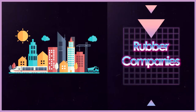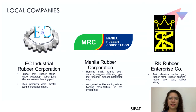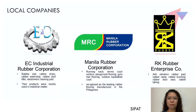For major companies in the rubber industry, we have three local companies. First is Easy Industrial Rubber Corporation, well known for providing dependable and affordable rubber products adhering to the highest quality standards. Their products are mostly utilized in industrial applications, particularly on highways, bridges, and indoor and outdoor environments. Their products include rubber mats, rubber strips, rubber water stops, rubber joint fillers, and elastomeric bearing pads, using materials such as neoprene, nitrile, EPDM, and silicone rubber.